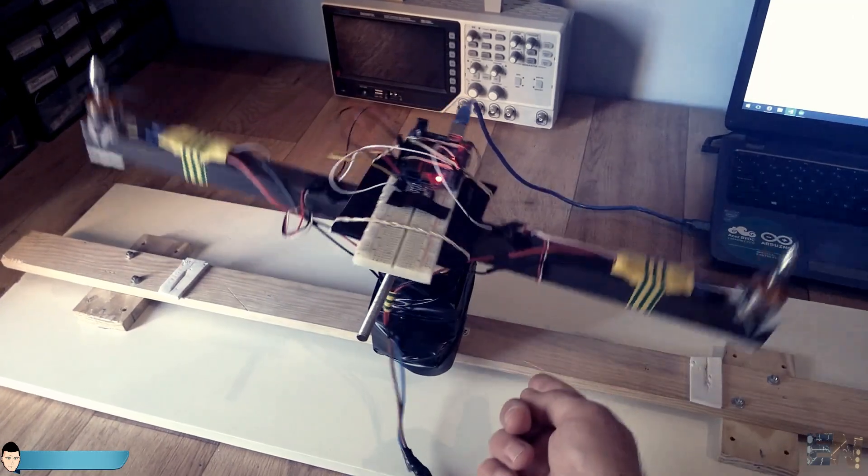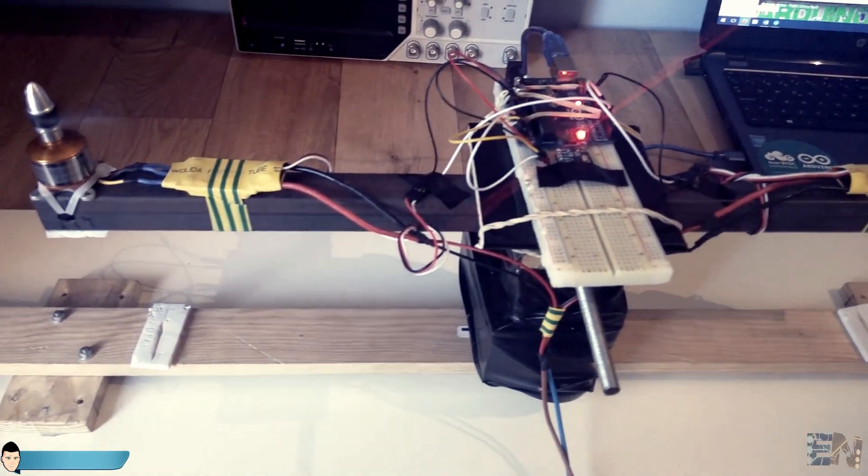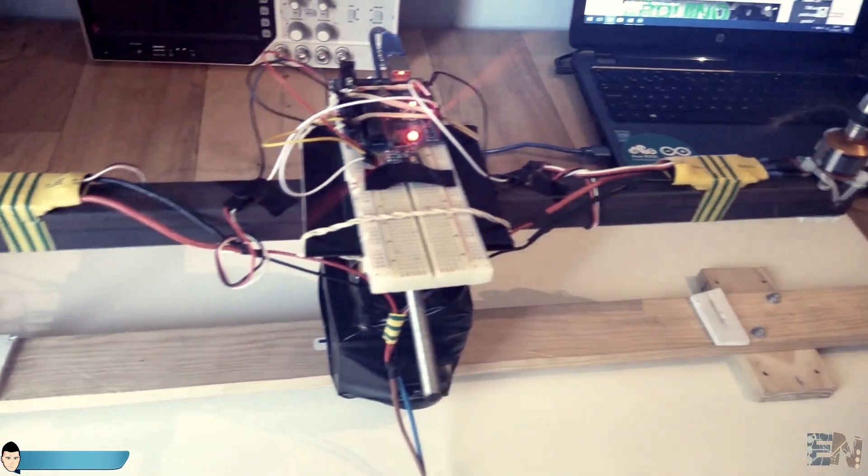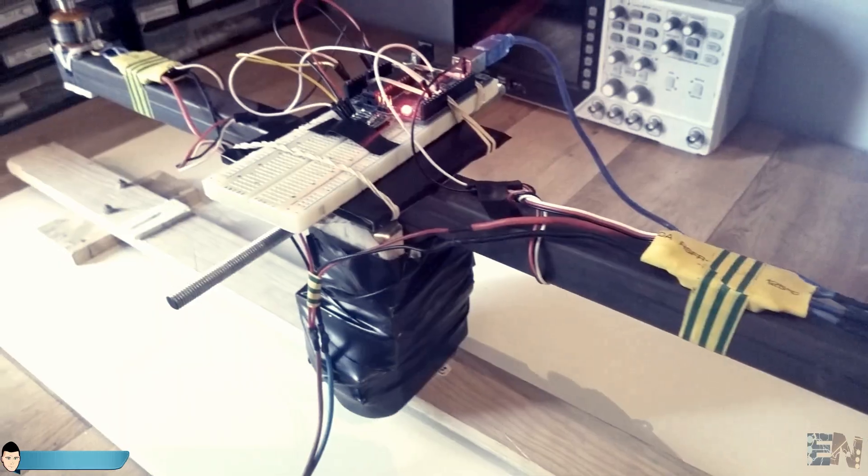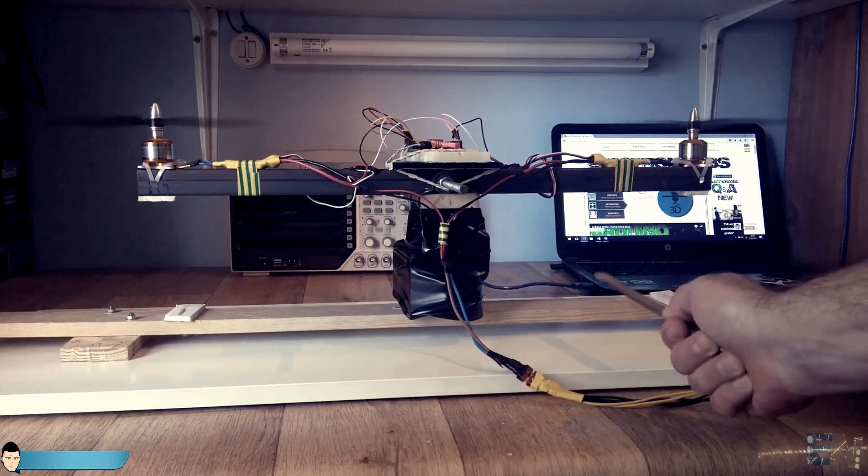If we change the desired angle when we calculate the error, we could stabilize the bar in any other angle. This is not the perfect PID control, but fine tuning the constants, you could always obtain the best results.